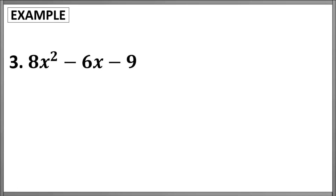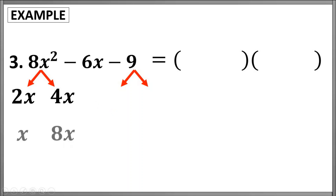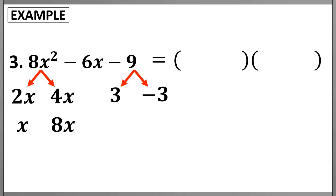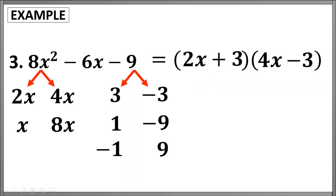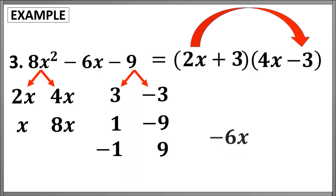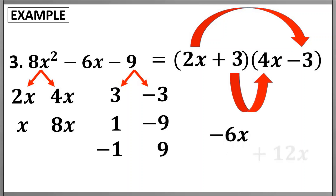For our last example: 8x squared minus 6x minus 9. Setting up 2 binomial factors, we list pair of factors of the first and the last terms. For the first term, we have 2x and 4x, as well as x and 8x. For the last term, since we have negative 9, one factor should be negative and the other positive. We have 3 and negative 3, another pair 1 and negative 9, and another pair negative 1 and 9. Let's check 2x and 4x for the first terms, and plus 3 and minus 3 for the second terms. Multiplying the outers: 2x times negative 3 gives negative 6x. For the inner terms, 3 times 4x gives positive 12x. Combining this gives positive 6x.